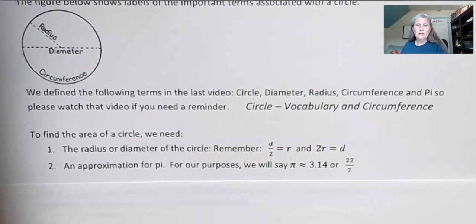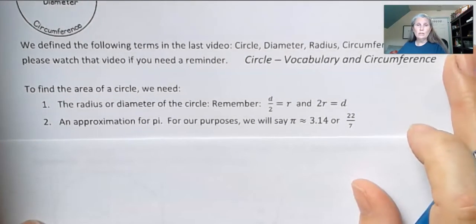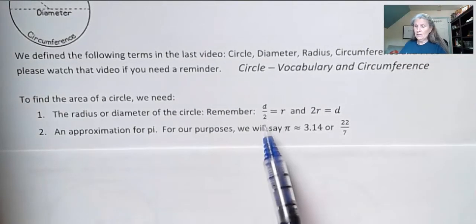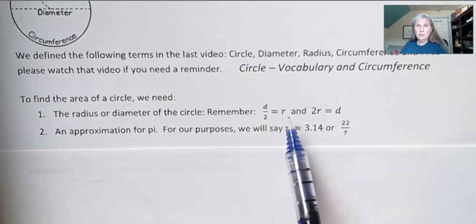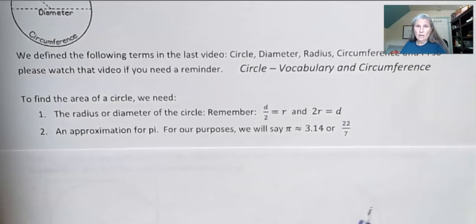In order to find the area of a circle, I need two things. I need the diameter or radius. Either one will do because if I have the diameter and I divide by two, that tells me the radius. So I just need one of those two and I'll have what I need. And the other thing is an approximation for pi.